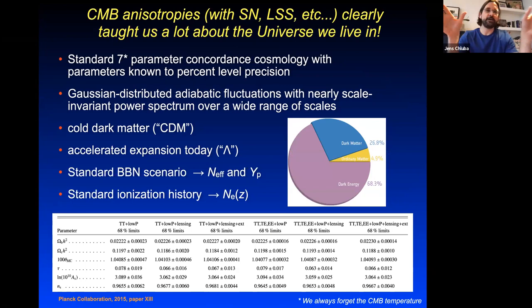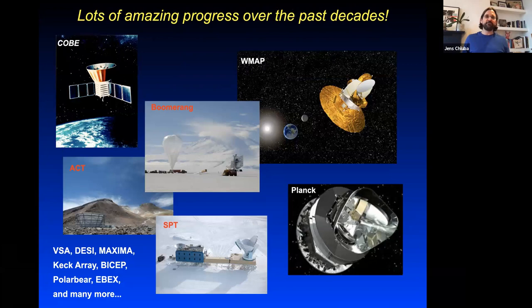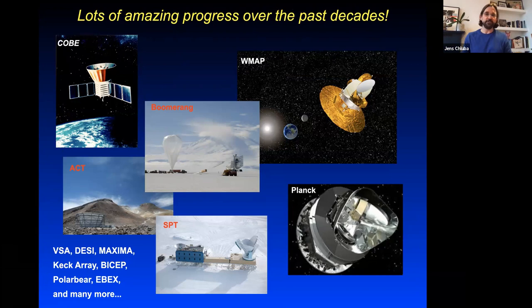There's a lot to look forward to with upcoming measurements of the primordial B-modes, which will tell us more about cosmology. But I'm not going to talk about CMB anisotropies — I just wanted to remind everyone they've been extremely useful. There's a second part of the CMB we can look at: the average sky spectrum. Rather than comparing temperatures in different directions, we look at the frequency dependence of the microwave background emission, which is given by a blackbody to extremely high precision — known since the COBE FIRAS measurements.